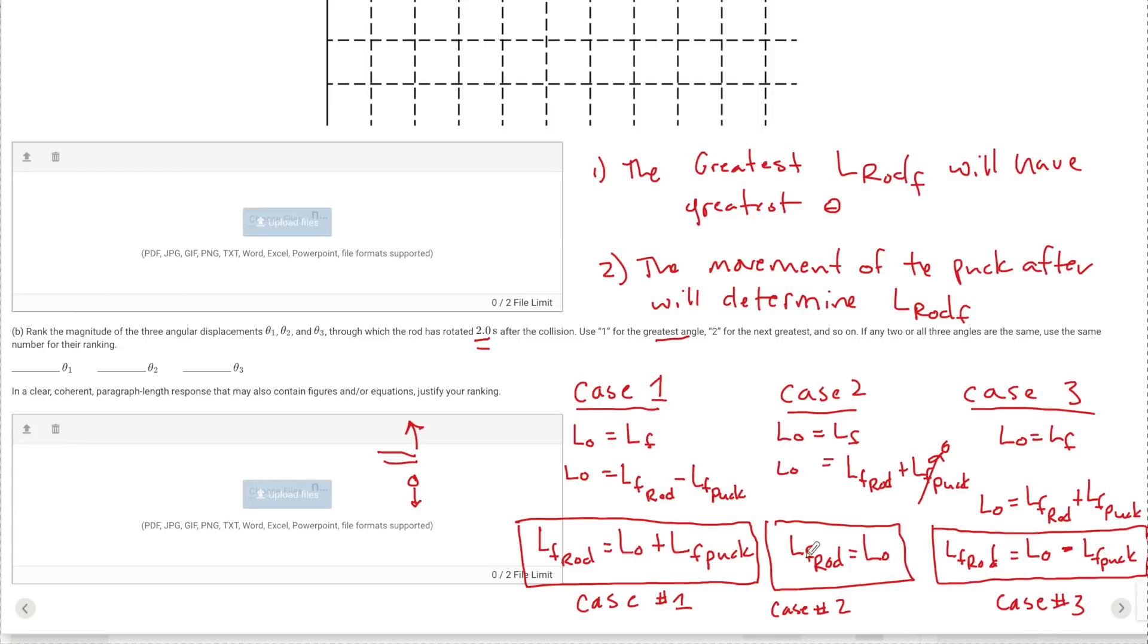So now I have some initial standard right here where L final is just equal to L naught. This one is L naught plus a little something. So case one has to be greater than case two. And case three is that initial minus some sort of number. So this case three is smaller than this. So we have a situation where one is going to have the greatest displacement. Two is going to have the second. And three that's going to have the third. And here's your explanation.